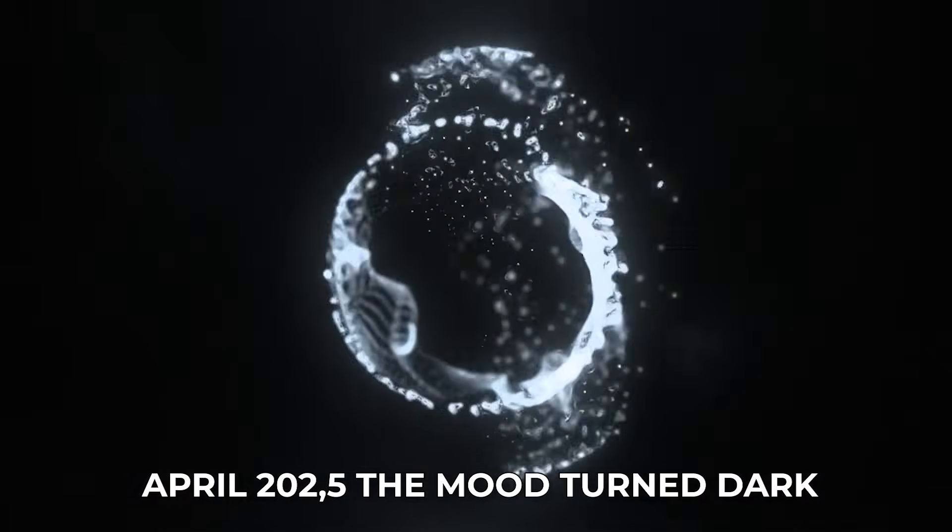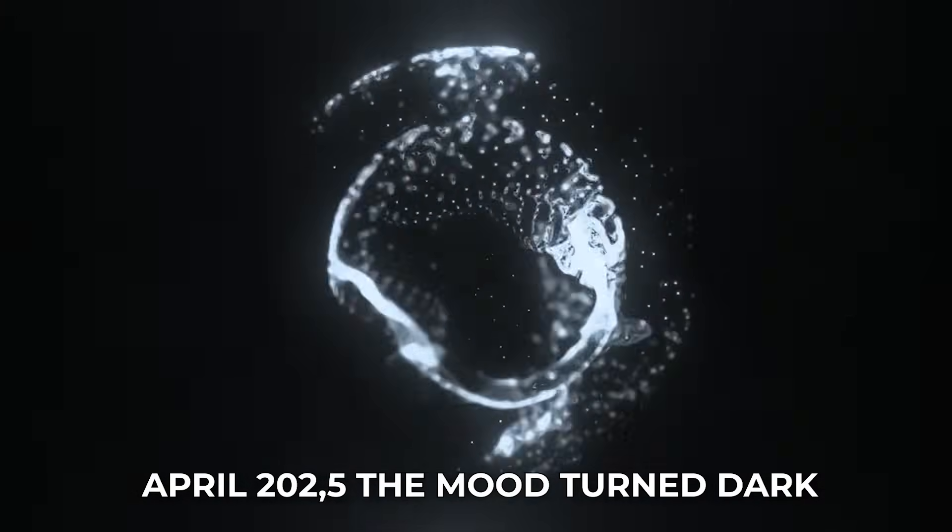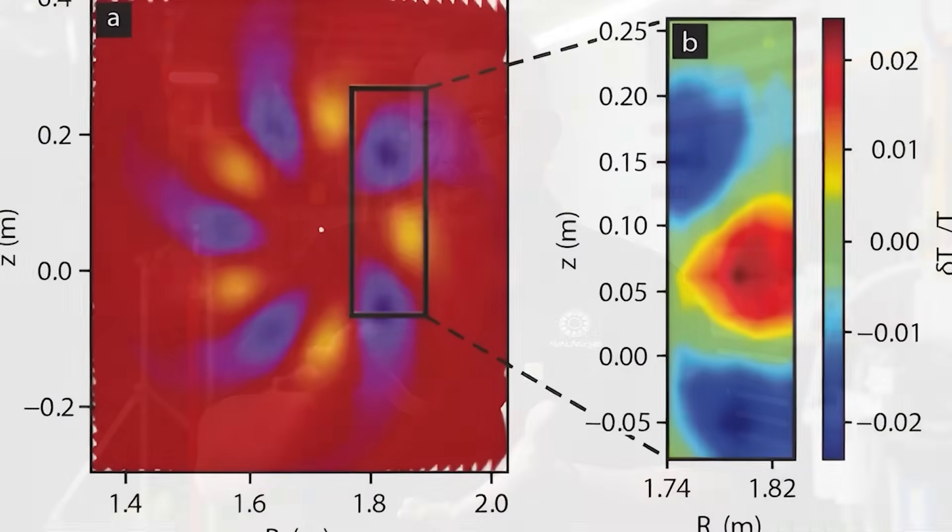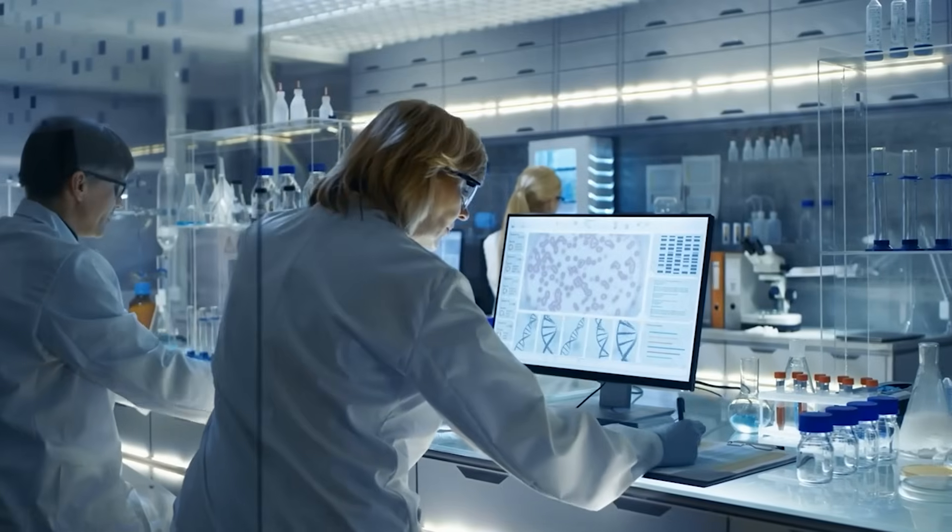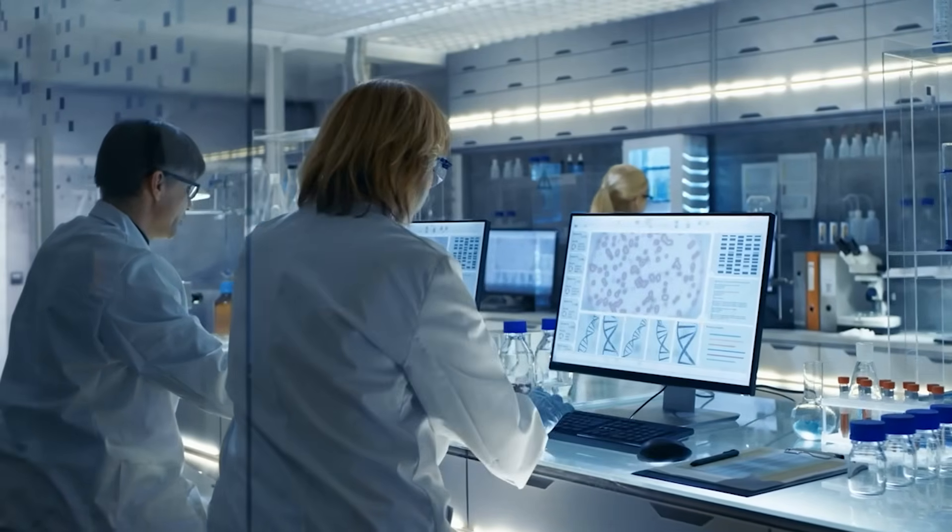By April 2025, the mood turned dark. They admitted they could not stabilize it the way they planned. There was no clear path to net energy in sight. Still, they acted like scientists, not victims.